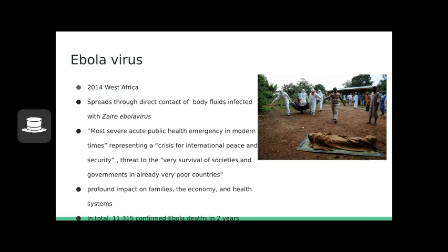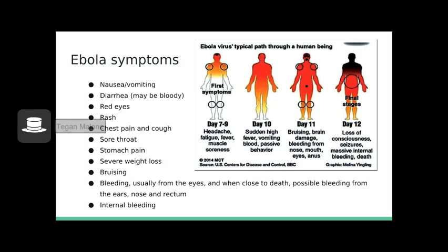In total, there were 11,315 confirmed Ebola deaths in two years. Ebola symptoms include nausea, vomiting, bloody diarrhea, red eyes, rash, chest pain and cough, sore throat, stomach pain, severe weight loss, bruising, bleeding usually from the eyes, and when close to death, possible bleeding from the ears, nose, and rectum, as well as internal bleeding.